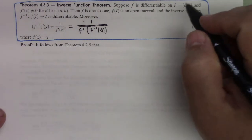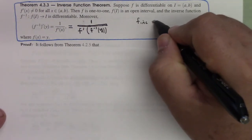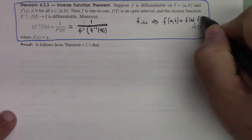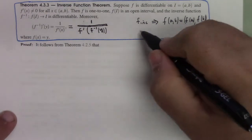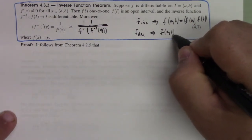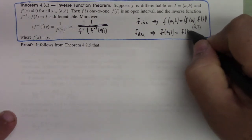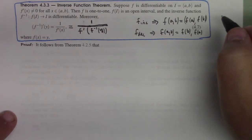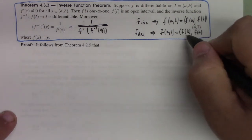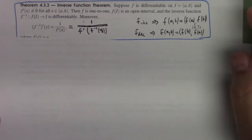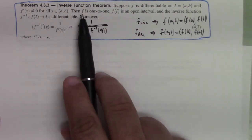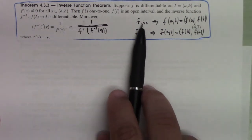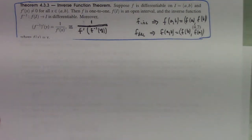From a previous section we know that f increasing implies f(a, b) = (f(a), f(b)), and f decreasing implies f(a, b) = (f(b), f(a)). So in either case, f(I) is an open interval. Also, strictly increasing or decreasing implies one-to-one, and if it's one-to-one, set theory allows us to construct the inverse with the range as domain. It remains to show that the inverse function is differentiable.